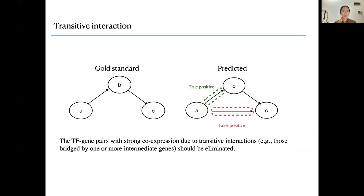However, only considering the gene expression of two genes may be insufficient, especially in the case of transitive interaction. For example, suppose gene A can regulate gene B and gene B can regulate gene C, but there is no direct interaction between gene A and C. Because of the transitive interaction, the co-expression between gene A and C can be very strong, causing models that only consider co-expression to falsely predict an interaction — this is a false positive due to transitive interaction.